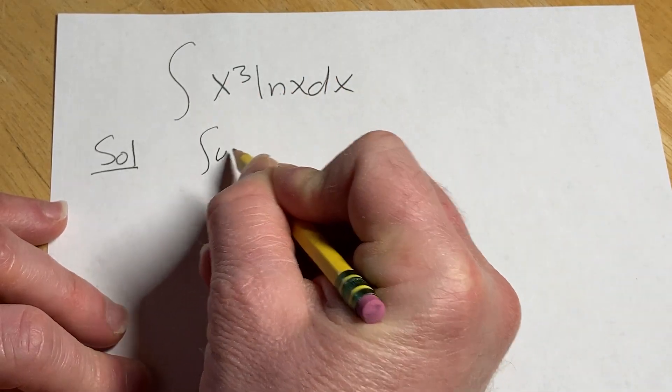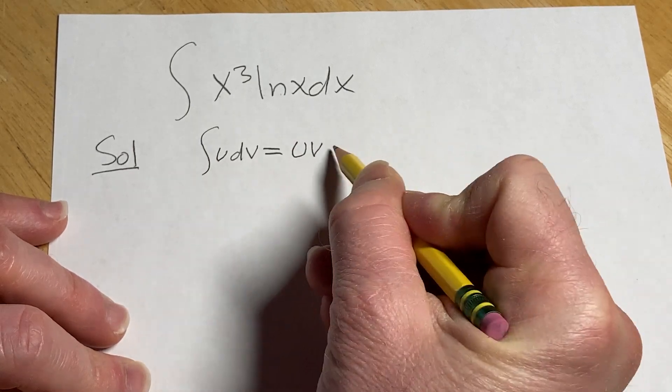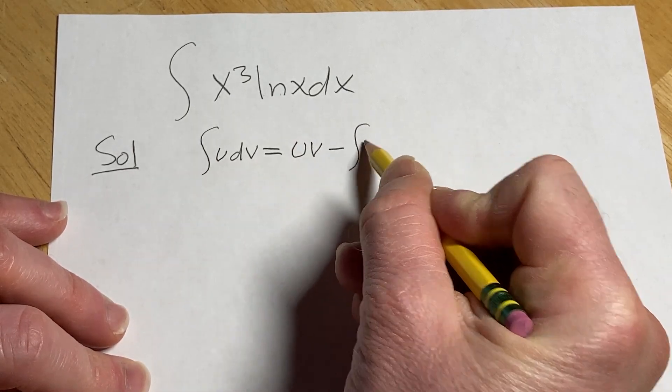It basically says if you have the integral of udv, this is equal to uv minus the integral of vdu.